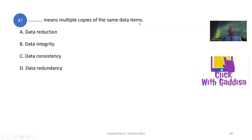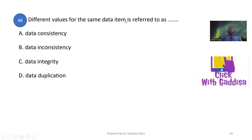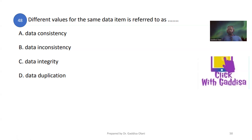Data redundancy means multiple copies of the same data items. You can see the failure of data reliability — it refers to having different values for the same data items. When we have different values for the same data items, we are violating data consistency. This is called data inconsistency.